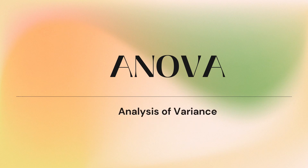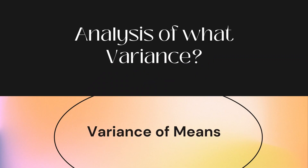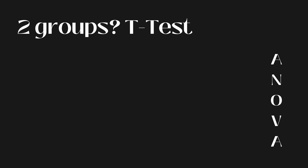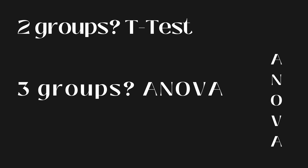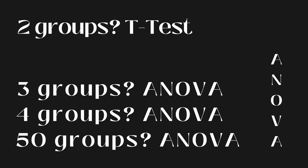Analysis of variance. Variance of what? Variance of means. ANOVA is quite similar to a t-test, as we are once again comparing means of different groups. The most important difference is that an ANOVA is used when we have more than two groups. Three groups? ANOVA. Four groups? ANOVA. Fifty groups? It's still ANOVA, but let's hope you never have 50 groups.